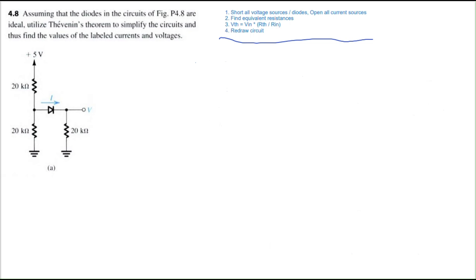Problem 4.8 from Microelectronics Circuits, 8th Edition by Sedra and Smith. Assuming the diodes in the circuit of Figure 4.8 are ideal, utilize Thevenin's theorem to simplify the circuits and thus find the values of the labeled currents and voltages.